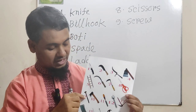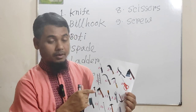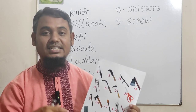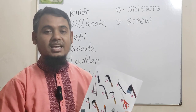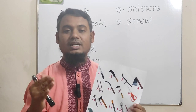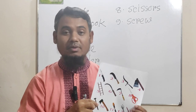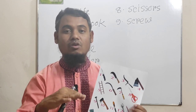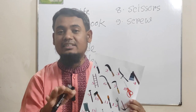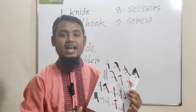Picture number ten is axe. Axe is used to cut bamboo and small trees and so on. It is used by farmers or village people to cut bamboo or any other small trees. Picture number ten is axe.